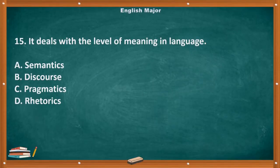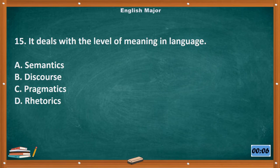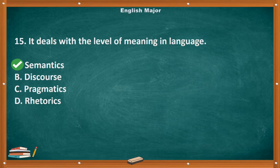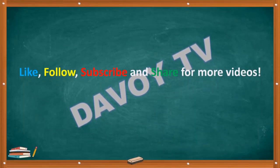Question number 15. It deals with the level of meaning in language. A. Semantics. B. Discourse. C. Pragmatics. D. Rhetorics. The correct answer is letter A, Semantics. Like, follow, subscribe and share for more videos. Thank you for watching, future LPT.